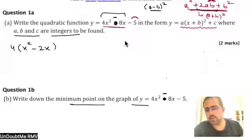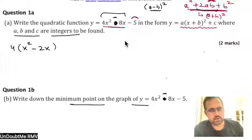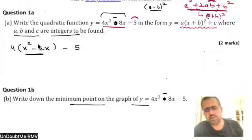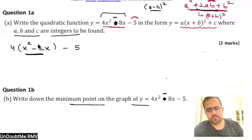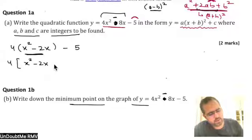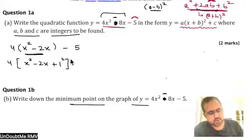So x squared minus 2x, and then minus 5. Now we need to complete the square here. The logic will be the same as in the other examples. So it will be 4 times x squared minus 2x plus 1 — effectively 4 times 1, or you can write it as 1 squared.